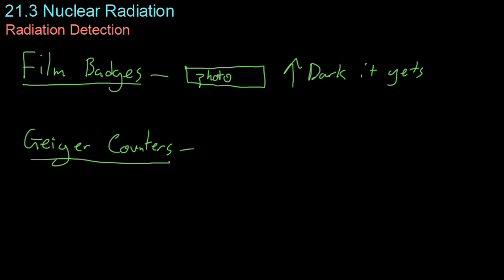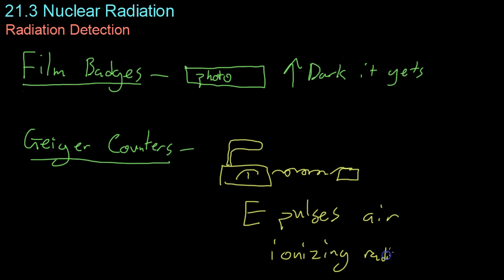Geiger counters, on the other hand, are those big handheld things you've seen probably in movies and whatnot, with the cord coming out and the little stick on the end that has the dial. And it'll beep every time you get a hit of radiation. So, it counts the electric pulses released in air by ionizing radiation. So, this isn't good for counting over long periods of time. However, you can visibly hear with the ticking how much radiation you're getting at any given point.